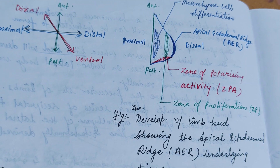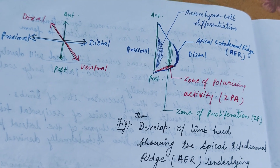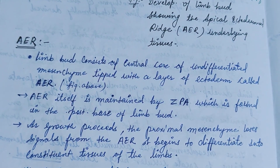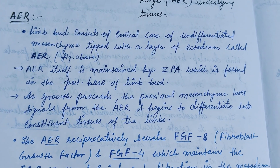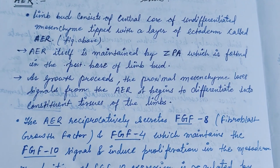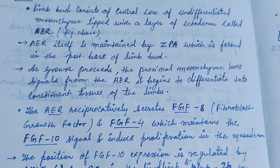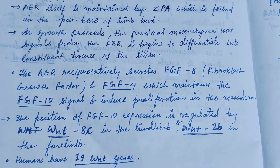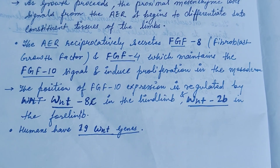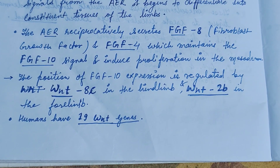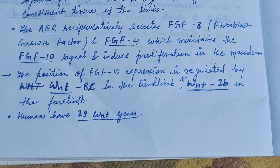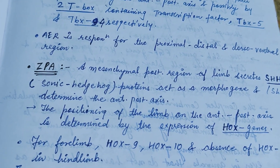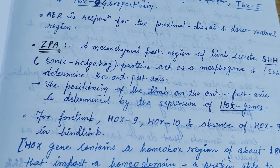First the limb field appears, then the limb buds are formed, and then limb development starts. The apical ectodermal ridge (AER) consists of a central core of undifferentiated mesenchyme at the tip with a layer of ectoderm. The AER is maintained by the ZPA, the zone of polarizing activity. The AER reciprocally secretes FGF8 and FGF4, which maintain FGF10 signals and induce proliferation in the mesoderm. The AER is responsible for the proximal-distal and dorsal-ventral patterning.